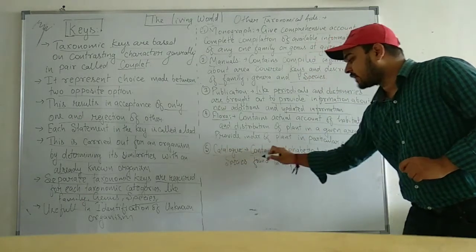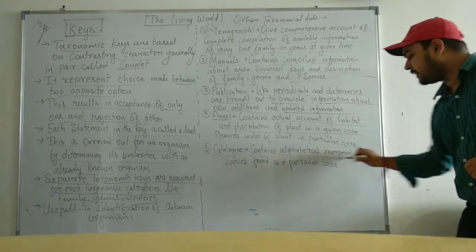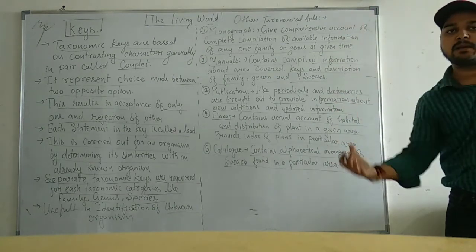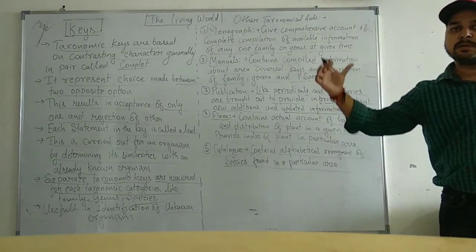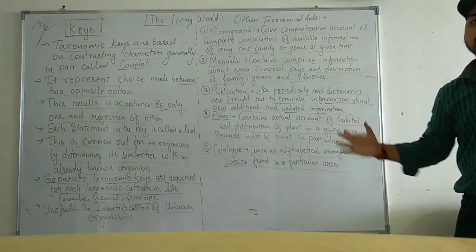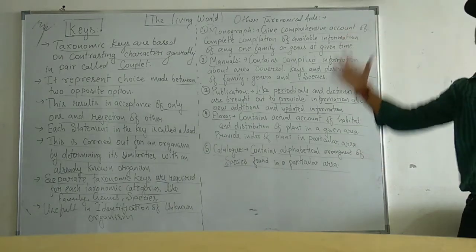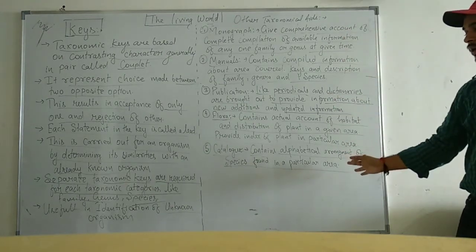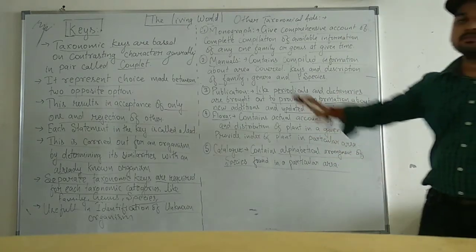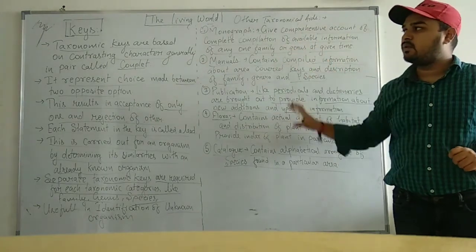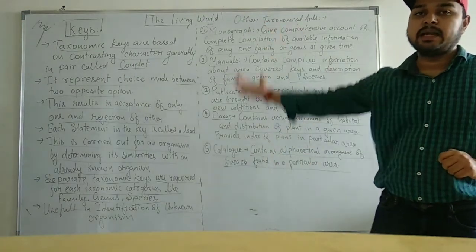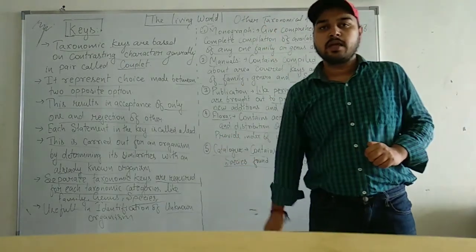Then there are Catalogs. Catalogs contain an alphabetical arrangement of species found in a particular area. So in Catalogs there are alphabetical arrangements of organisms and species, while in Flora there is only plant information of a particular area. Thank you. Goodbye.